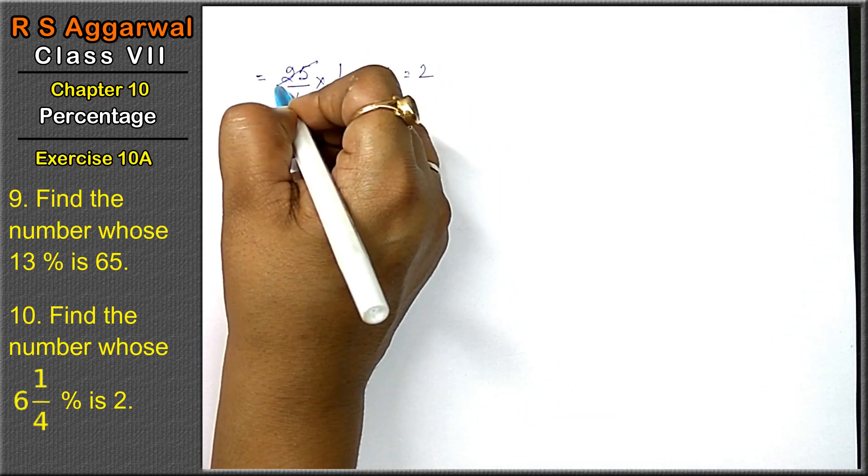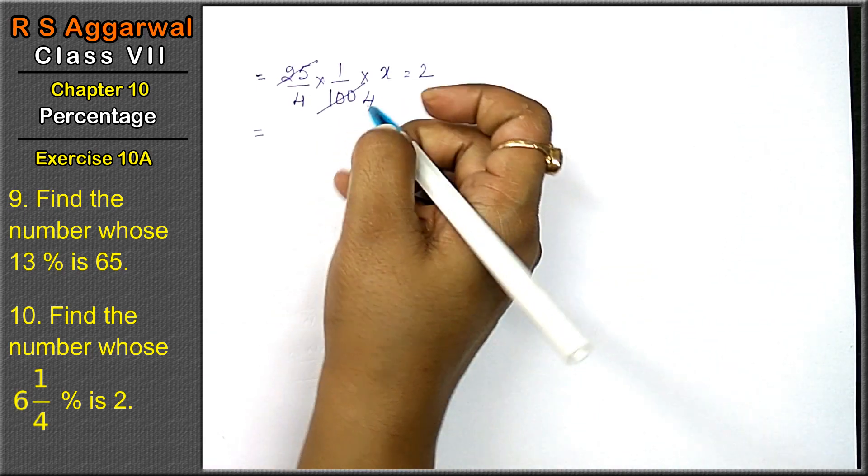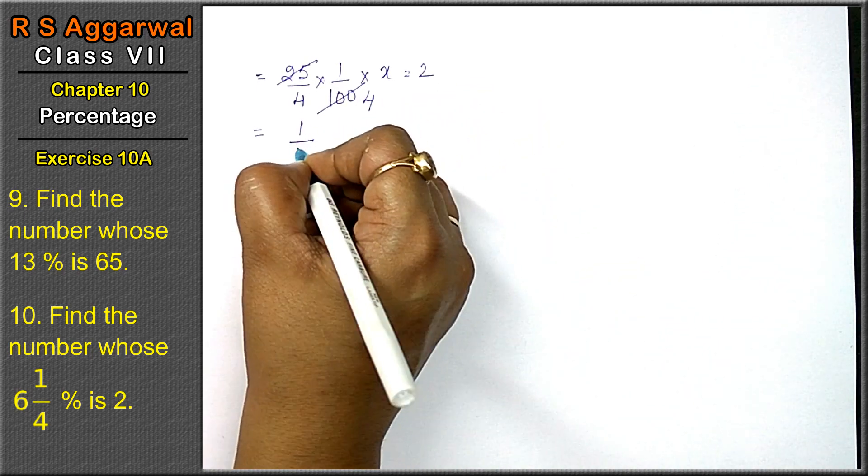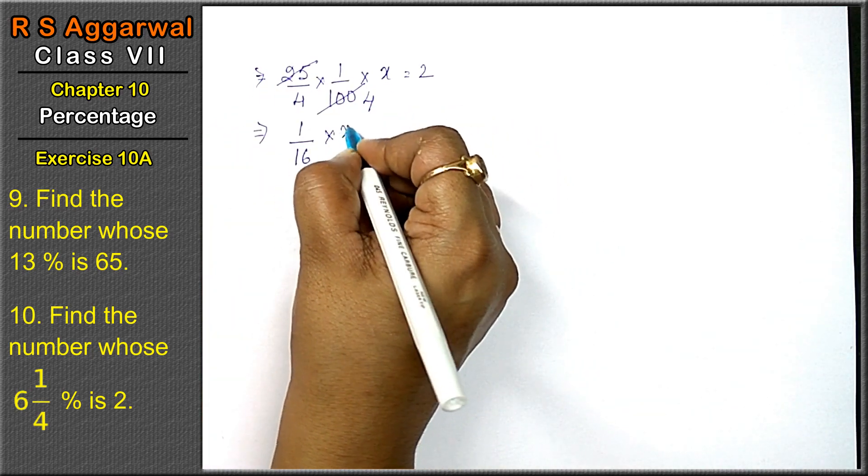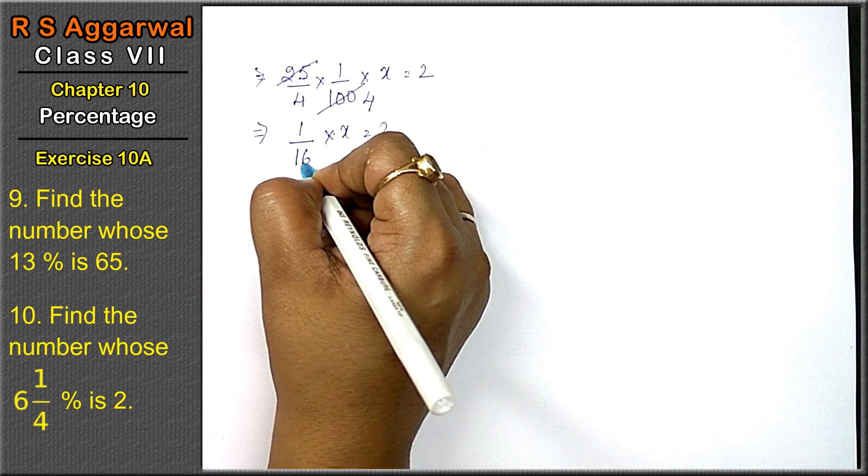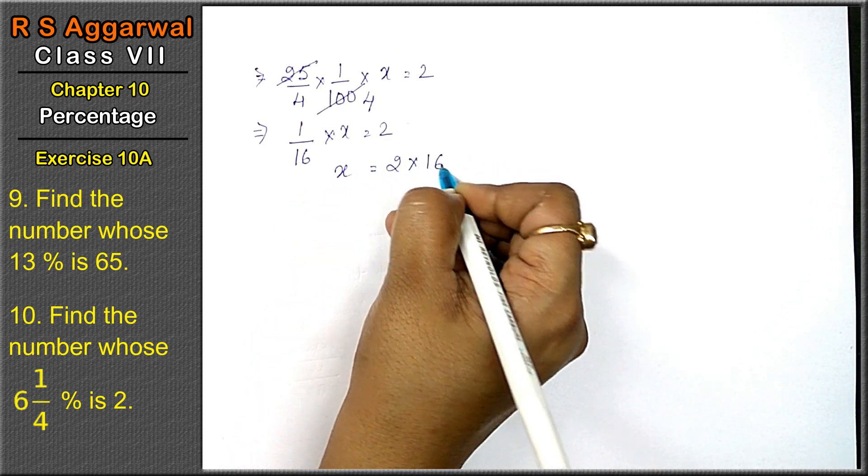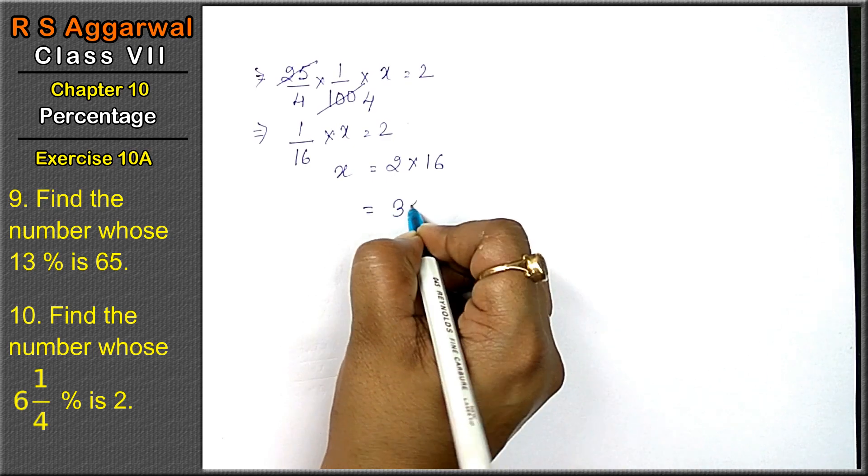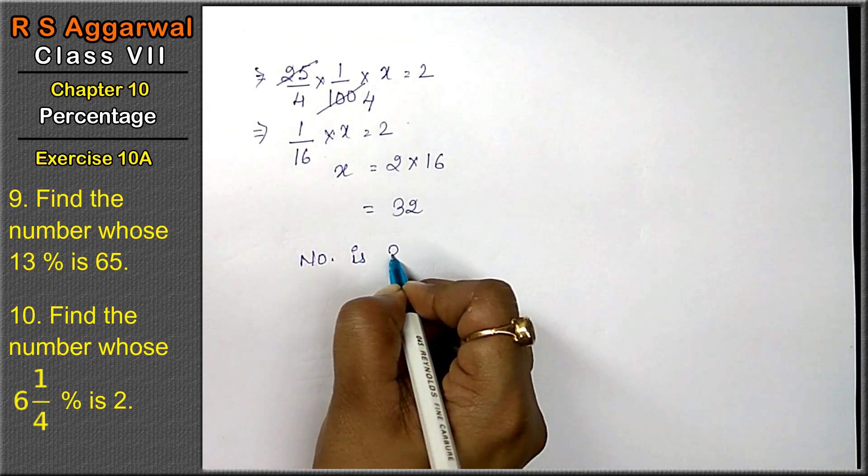Either we will deduct it over here. 25 once is 25, simplify it. 25 fours is 100. That means 1 upon 16 of x equals to 2. तो यहां यह denominator में इधर आके numerator को जाएगे. X equals to 2 into 16. That means x की value is 32. Number is 32.